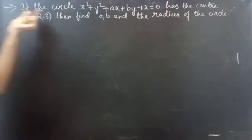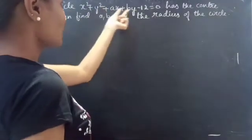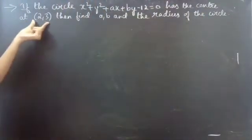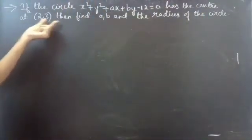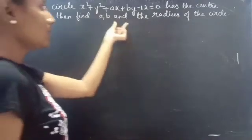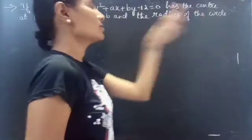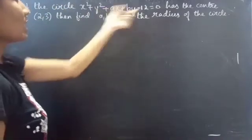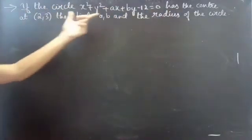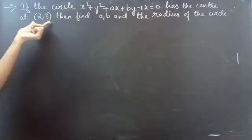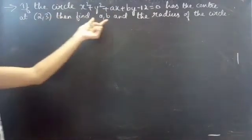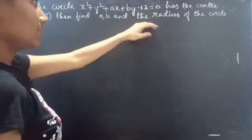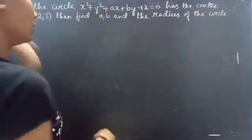Problem: if the circle x² + y² + ax + by - 12 = 0 has the center at (2, 3), then find a, b, and the radius of the circle. We are given a circle and its center, and we have to find the unknown values a and b and the radius.